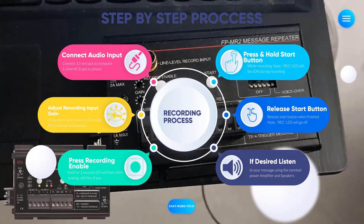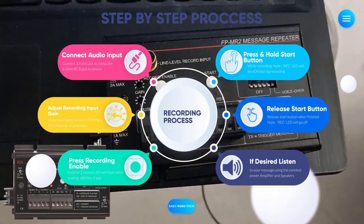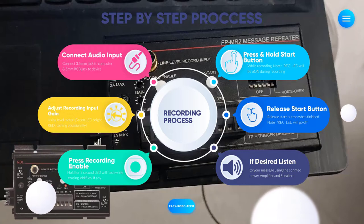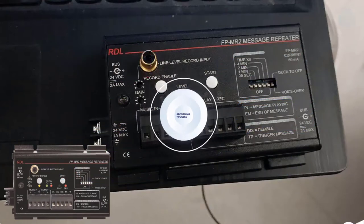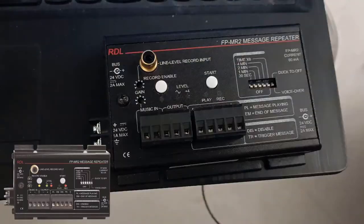This message repeater is usually installed to play a recorded audio stream when there is some external trigger. Basically, it will be used to play a fire evacuation message through the public addressing system or background music system when there is a fire activated in the building. In this video we will learn how to load the evacuation message into the message repeater.